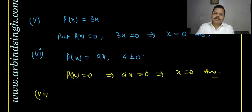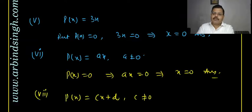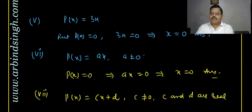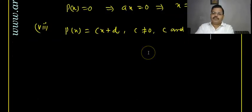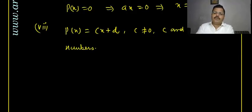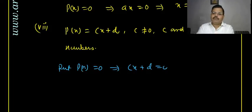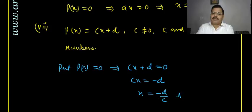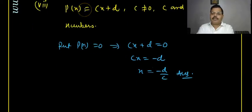Seventh: p(x) = cx + d, where c ≠ 0 and c, d are real numbers. Put p(x) = 0: cx + d = 0, so cx = −d, and x = −d/c. That is the zero of the polynomial. Note that c ≠ 0 is required because we cannot divide by zero.